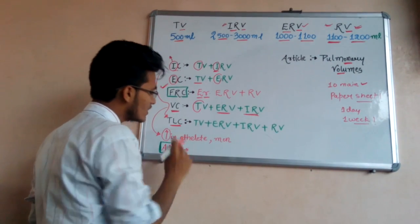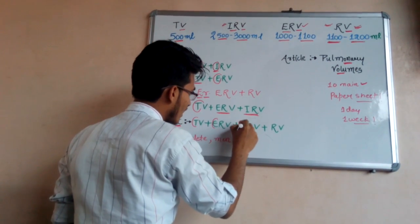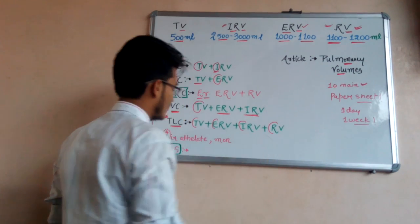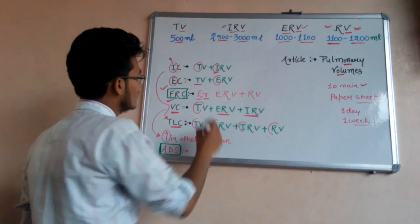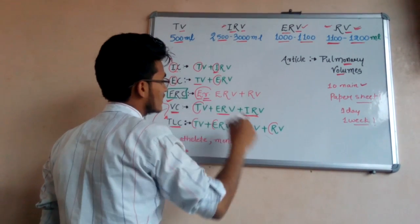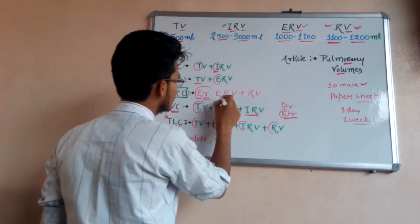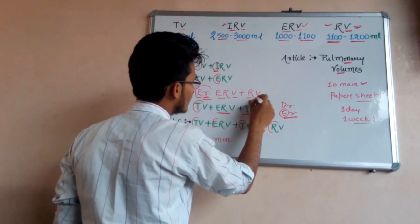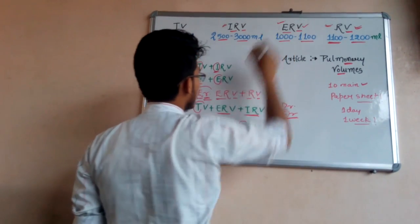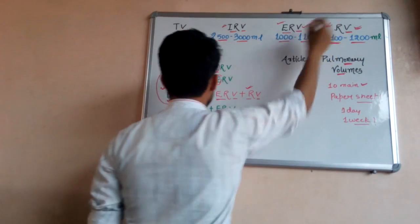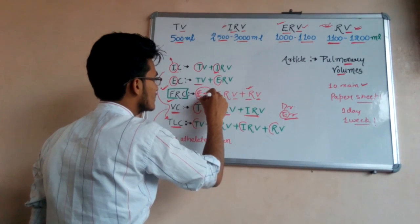For TLC — total lung capacity — we use all four volumes: TV, ERV, IRV, plus RV. For FRC — functional residual capacity — the trick is 'ER', like the abbreviation for engineer. 'E' means ERV and 'R' means RV, because in our four volumes only one starts with E (ERV) and only one starts with R (RV). So FRC equals ERV plus RV, and the mnemonic is ER for engineer.